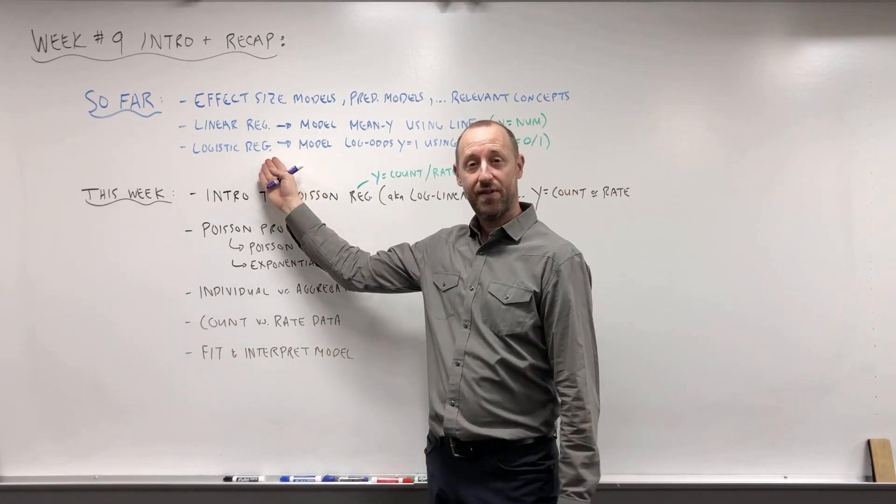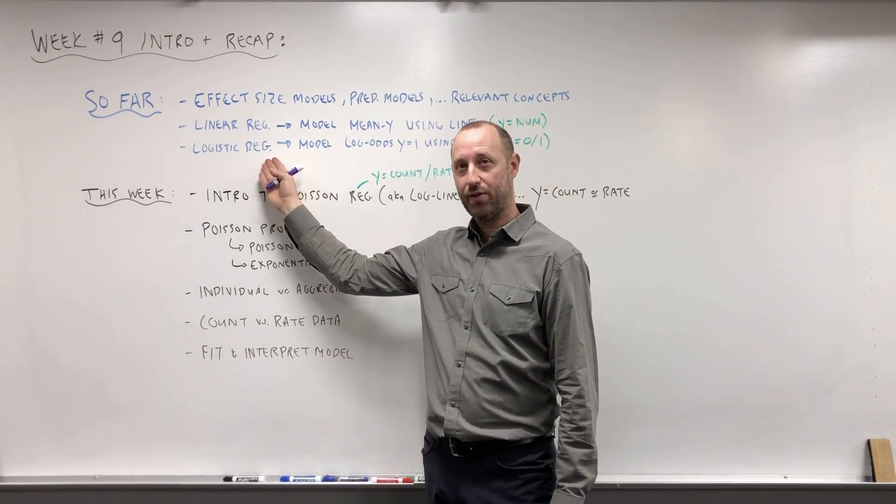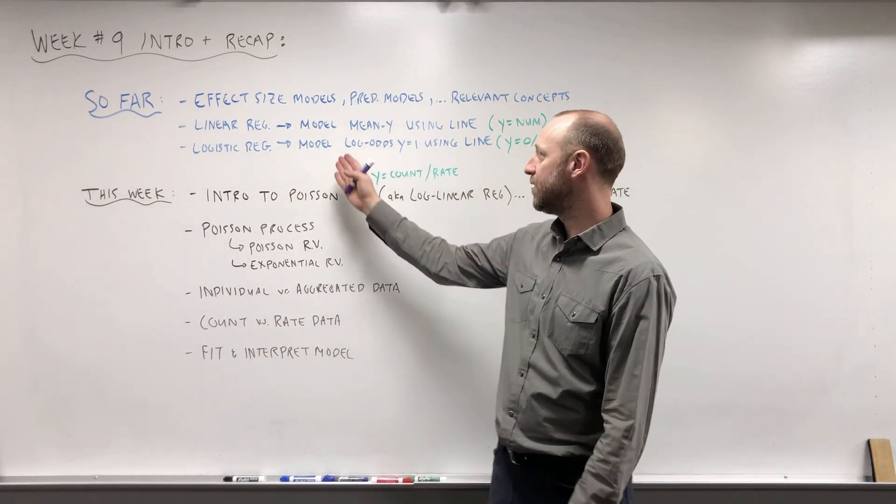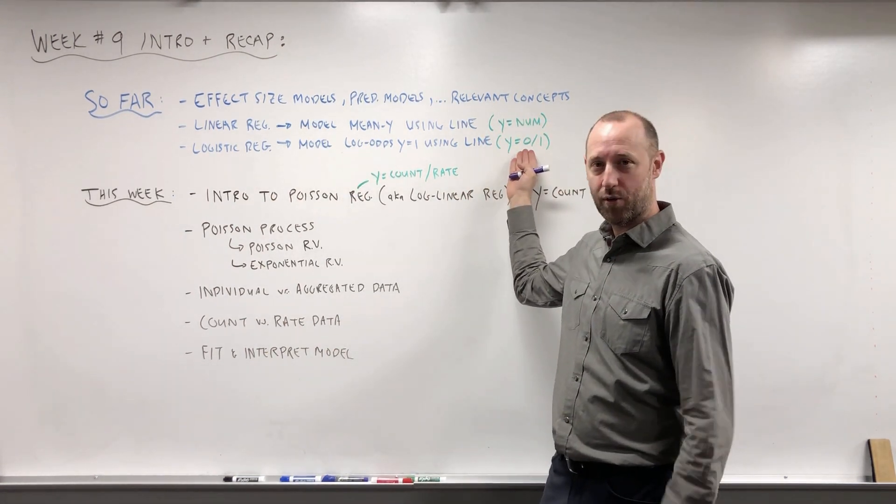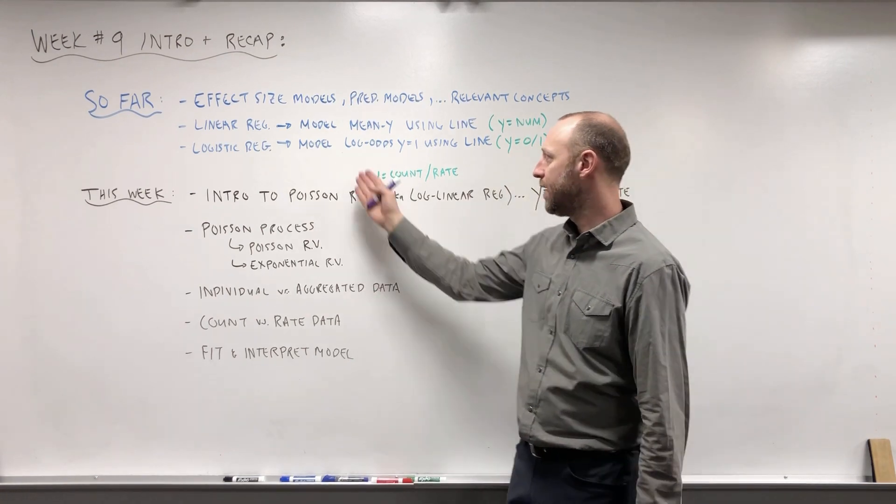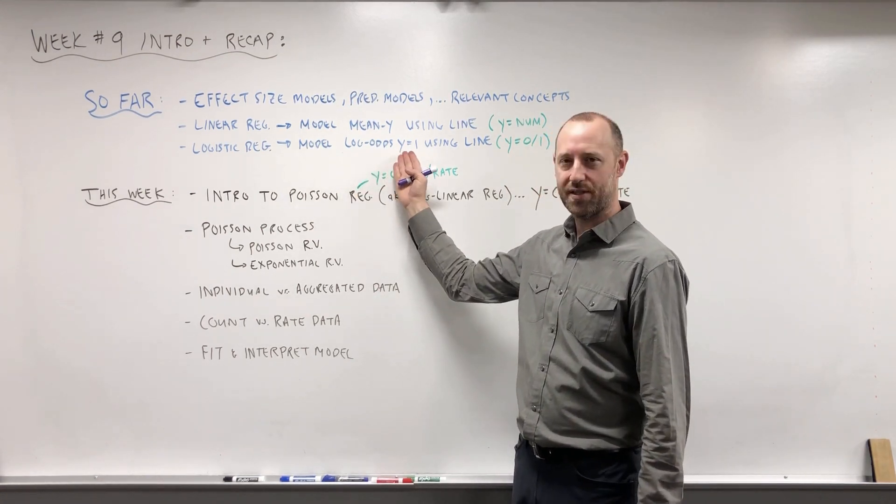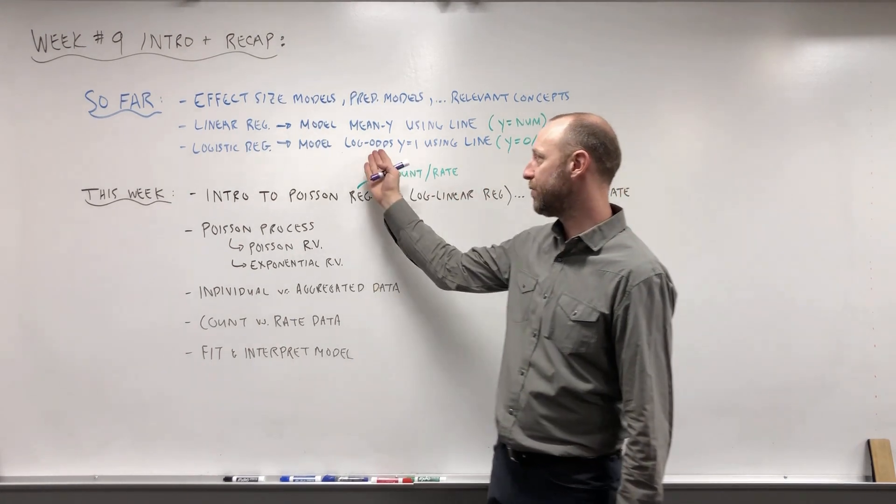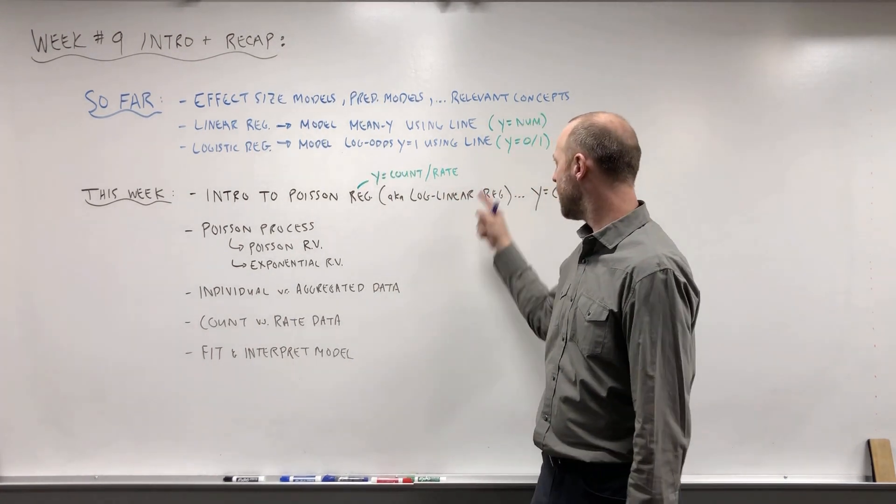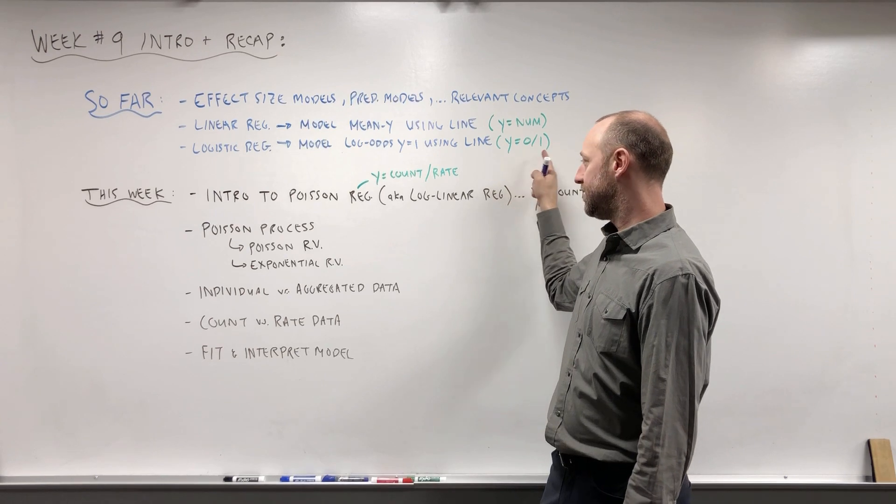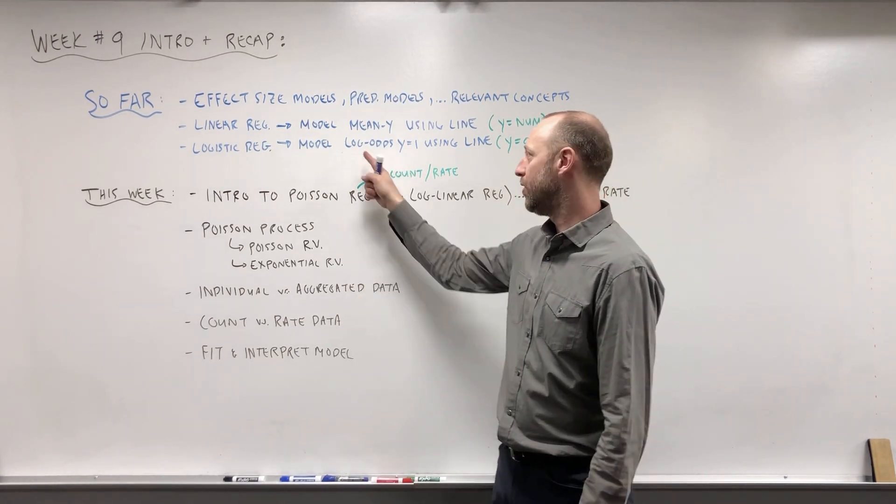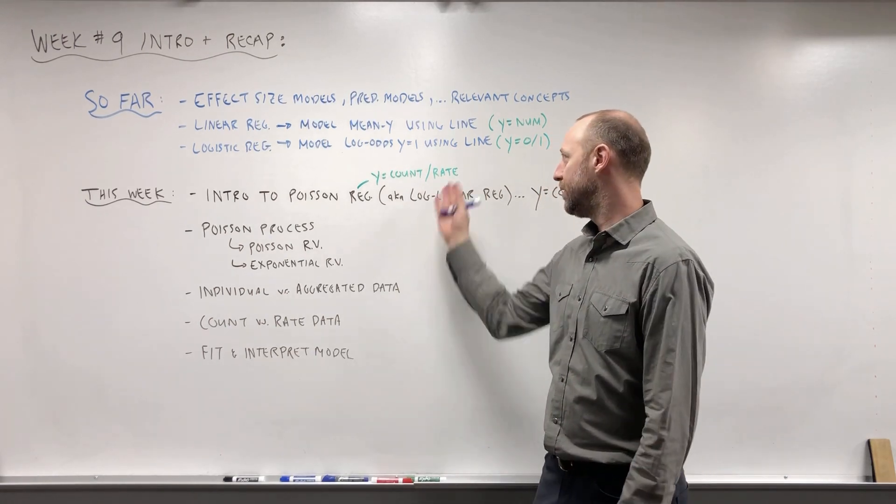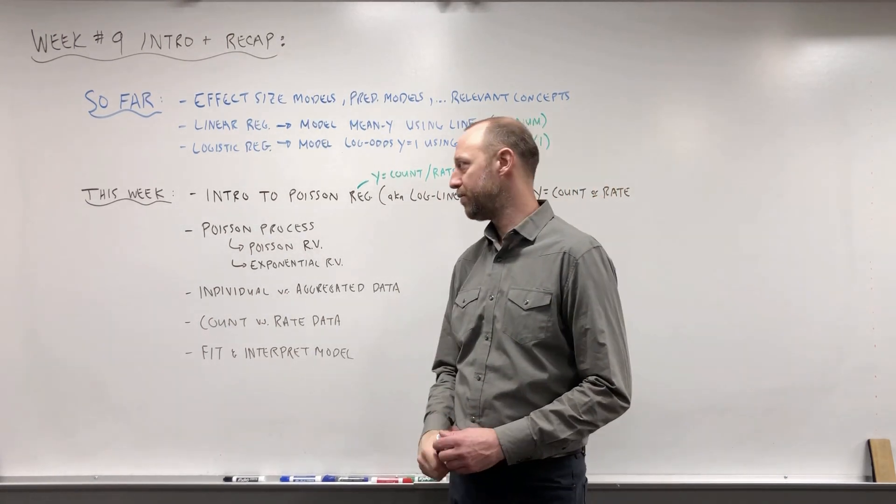Then we spent weeks five to eight of the course talking about logistic regression. And that's where our outcome is a yes, no, disease, yes or no type variable. And we're modeling the log odds of the outcome occurring, again using a line. So this was a generalized linear model. Rather than modeling does the disease happen, yes or no, we model the log of the odds of the disease happening using a line. So we linked to a linear function or generalized linear model.